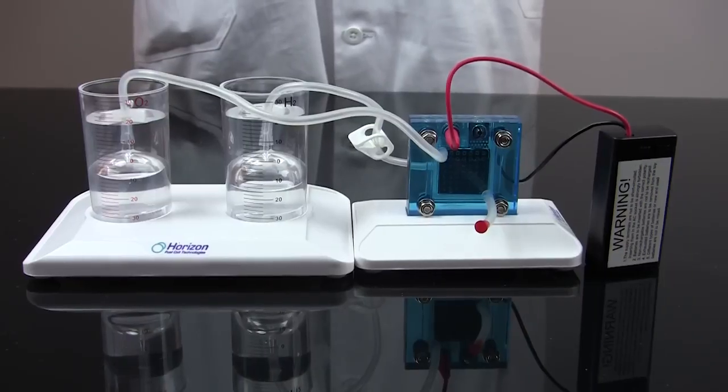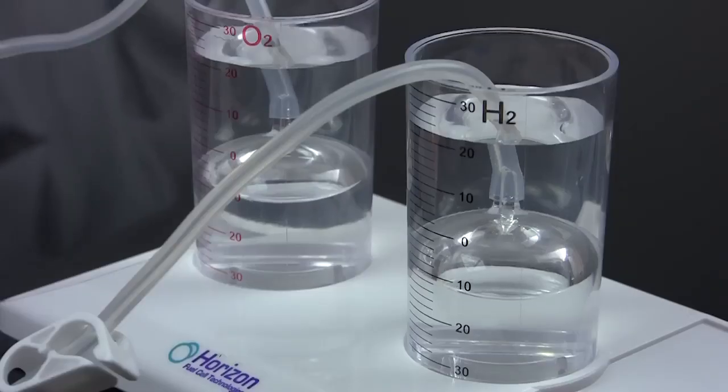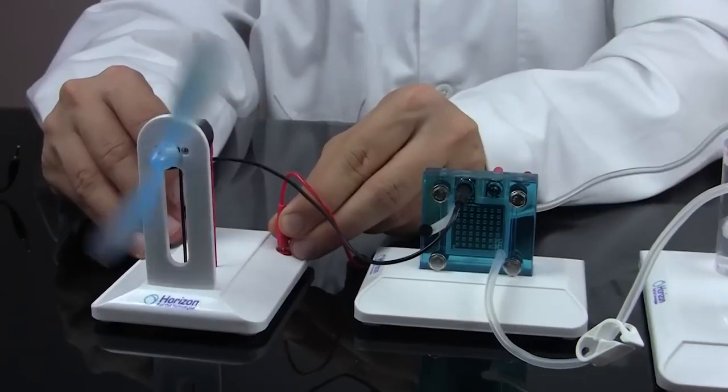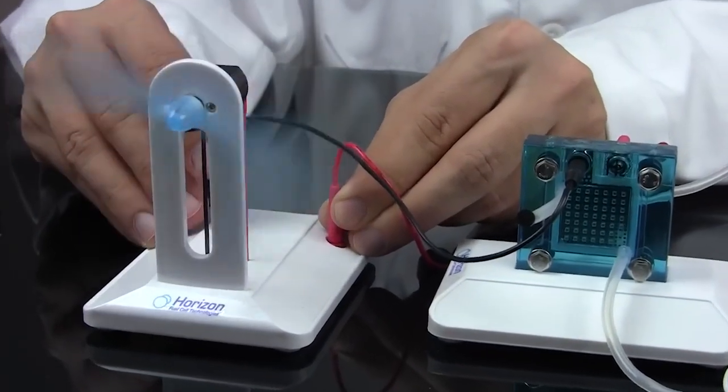Then watch as hydrogen and oxygen gas begin filling the cylinders. When you've got enough gas, disconnect the battery and connect the fuel cells to the fan motor to generate electricity.